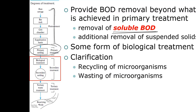It then may flow into an equalization basin — it doesn't necessarily have to have equalization. But in equalization, what we're looking at is equalizing the flow and the strength of the wastewater. From there, it moves into a primary settling basin. We have quiescent flow, achieving about 60% removal of suspended solids and about 30% removal of BOD.